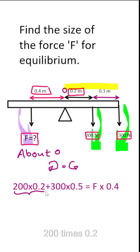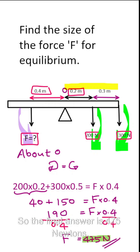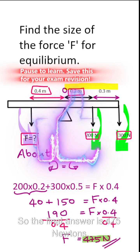200 times 0.2 is 40. 300 times 0.5 is half of 300. That's 150 is equal to F times 0.4. So 190 is equal to F times 0.4. So the final answer is 475 newtons.